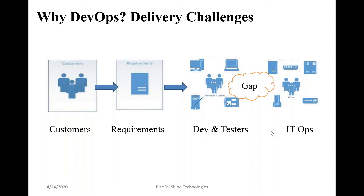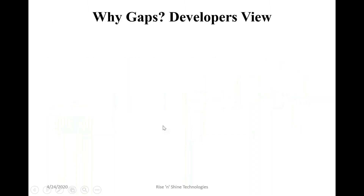Before understanding this, let's talk about the challenges in the release process between all the teams. Each team — we'll try to understand the roles of each member. In the entire project, what are the developer objectives, testing team objectives, and operation team objectives?